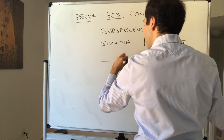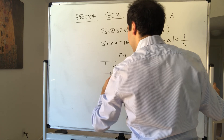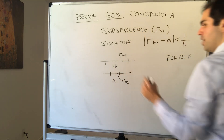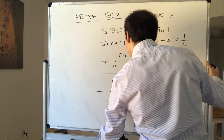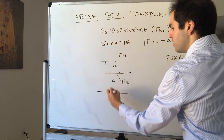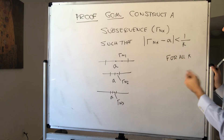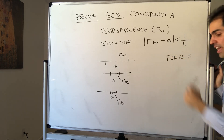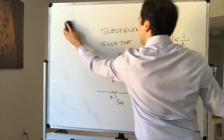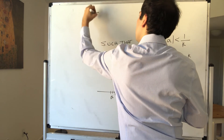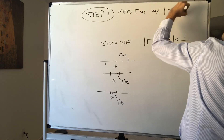So in the first step we want r_{n_1} to be within distance 1 of a, in the second step r_{n_2} within 1/2, in the third step r_{n_3} within 1/3, and so on. This sequence is slowly converging, and once we have it, by the squeeze theorem r_{n_k} → a since 1/k → 0. Step one: find r_{n_1} with |r_{n_1} − a| < 1.